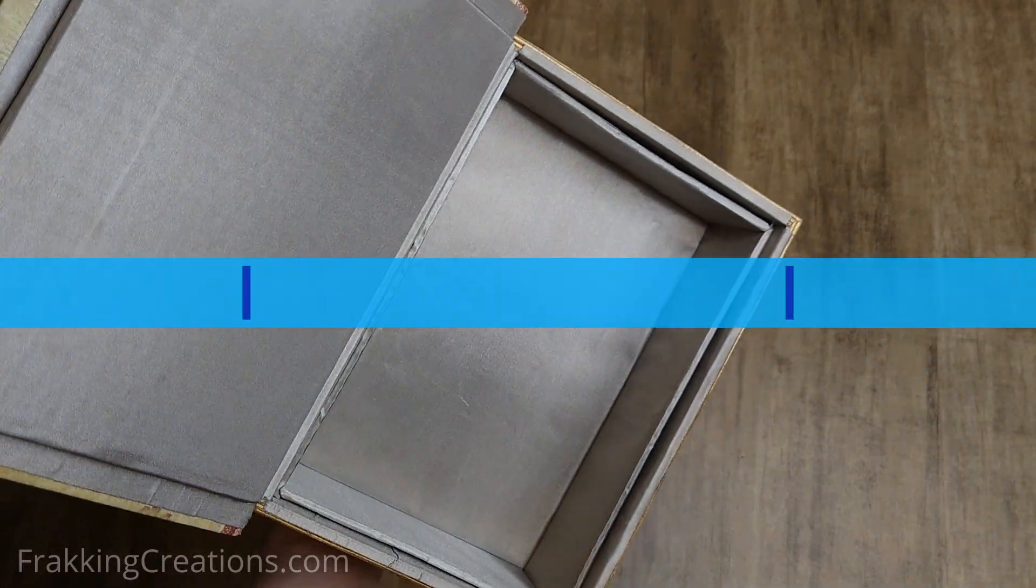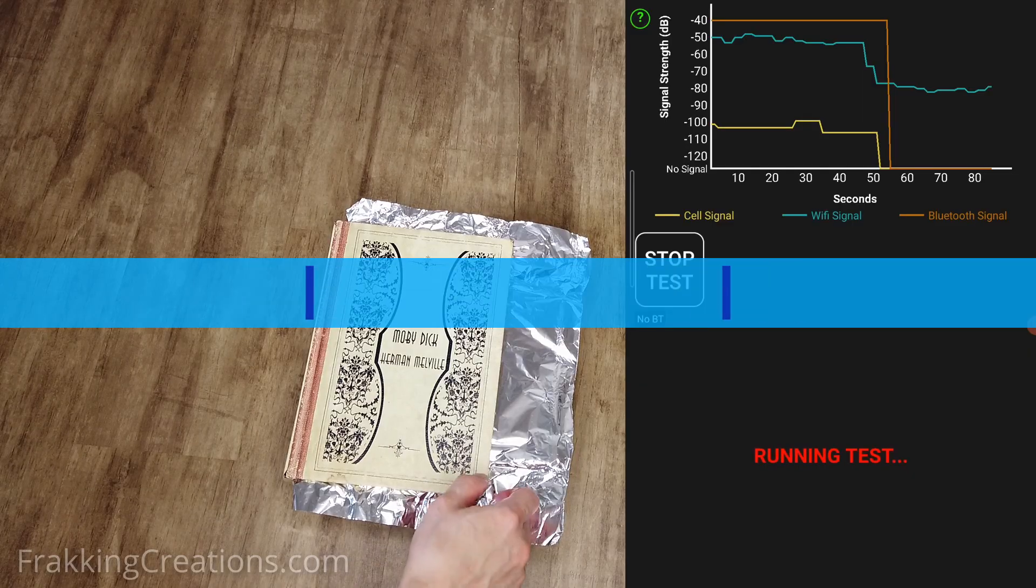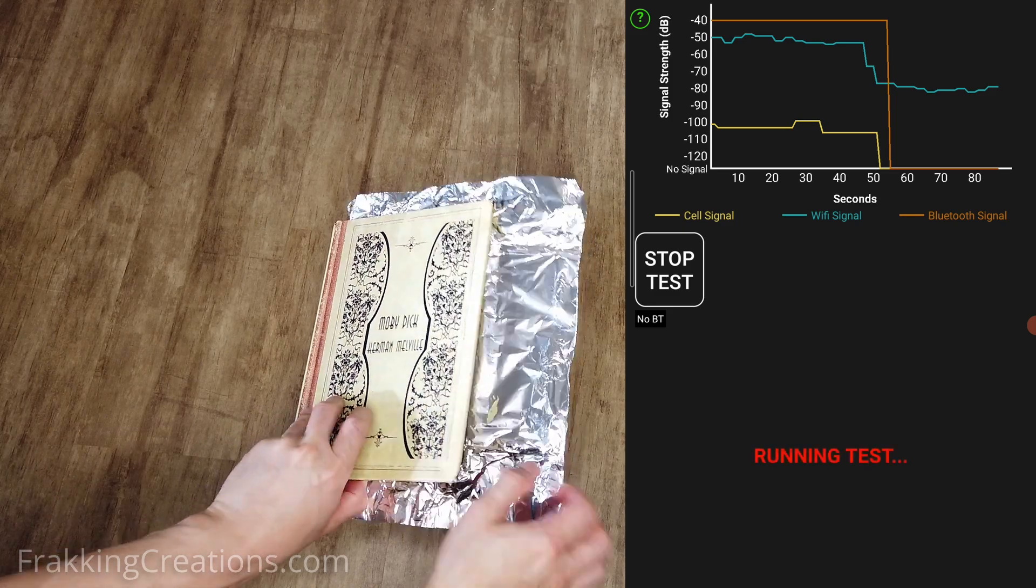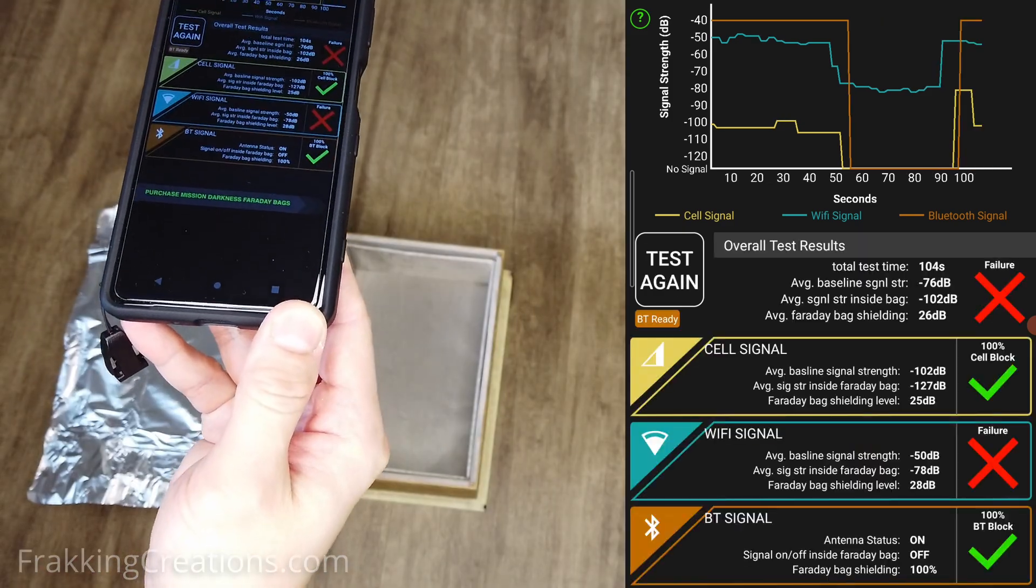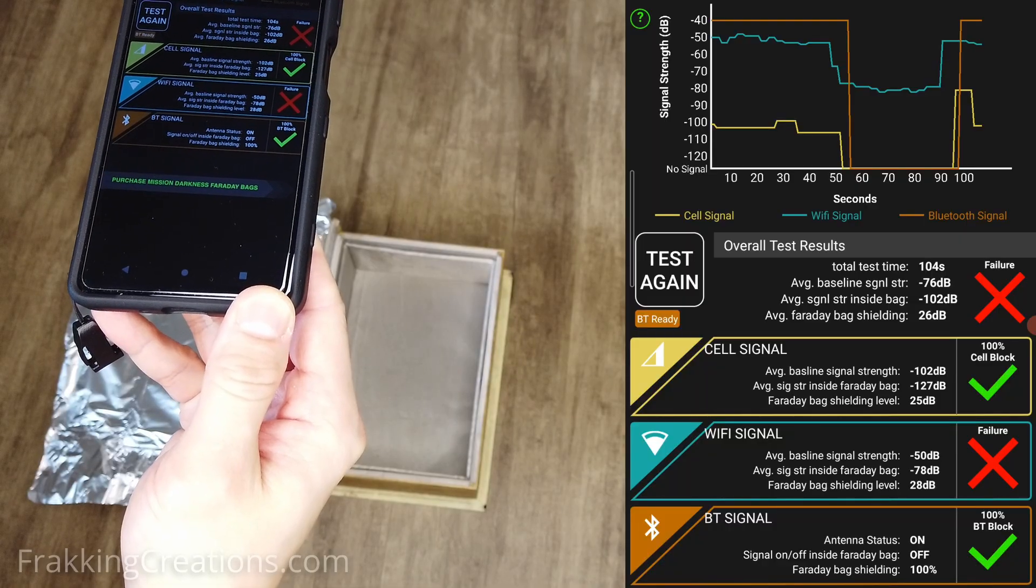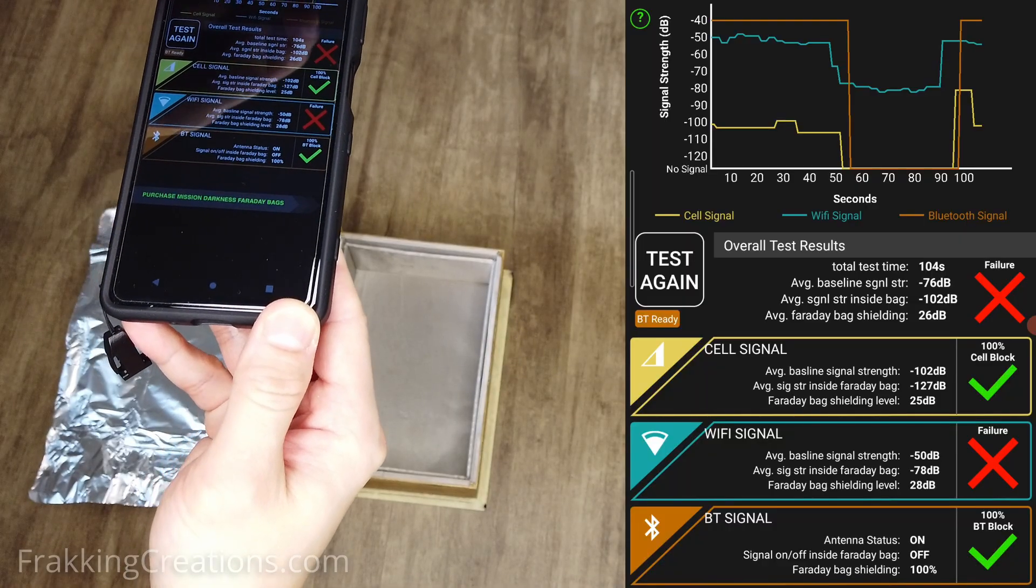Testing second attempt. Testing reveals that both Bluetooth and Wi-Fi are still able to get through so I use some aluminum foil to test sealing the lid better to see if that is the cause. It looks like that helps block Bluetooth now so only Wi-Fi left to deal with.